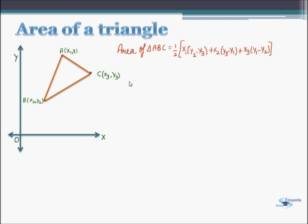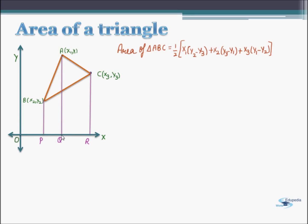Let us see how. Let us draw some lines from these vertices parallel to the y-axis as AQ, BP and CR. Since all these lines are drawn parallel to the y-axis, they will be parallel to each other. Thus, each pair of these lines will form a trapezium. So we have trapezium BPQA,